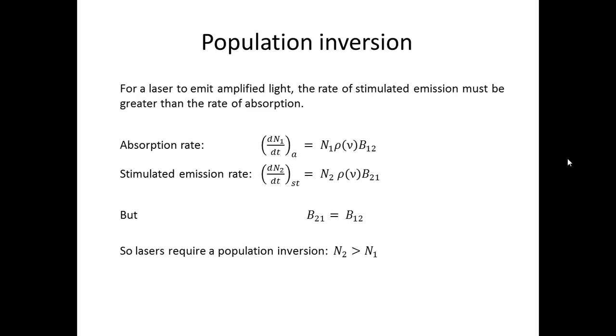Let's talk about population inversion. For any sort of laser to work we need gain, and for gain we need population inversion. So why do we need population inversion? Between the levels of the laser transition, the rate of stimulated emission has to be greater than the absorption rate for the gain.